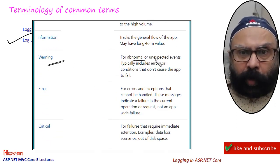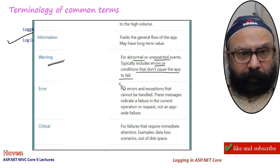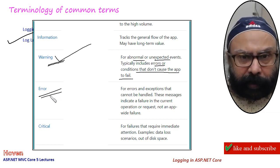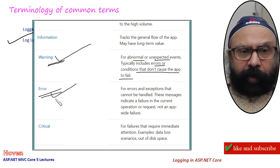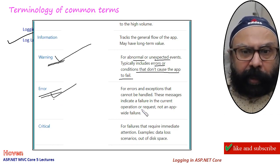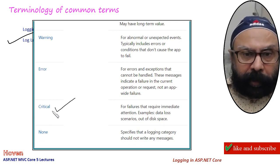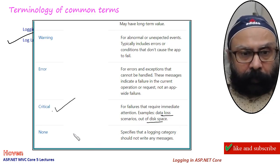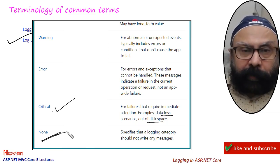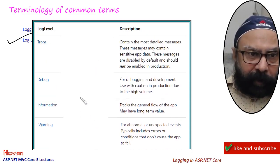Warning is for abnormal or unexpected events - typically they include errors or conditions that don't cause the app to fail. Error is for error conditions and exceptions that cannot be handled - these errors will not cause your application to crash but they indicate a failure in the current operation or request, not an application failure. Critical is for very serious failures, for example data loss or out of disk space. None means nothing is shown - nothing is logged. These are the various levels available to you.